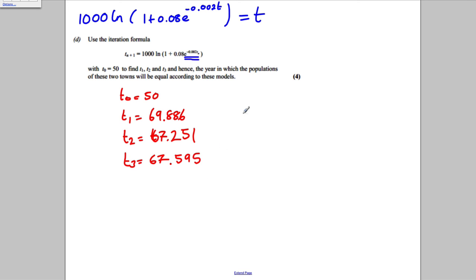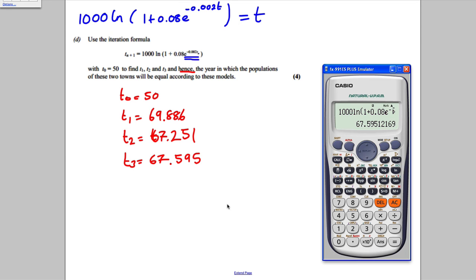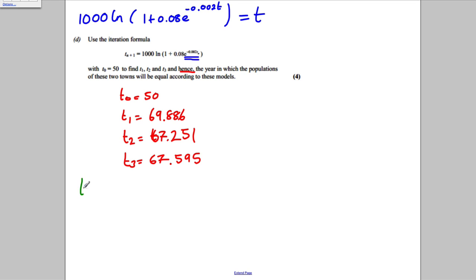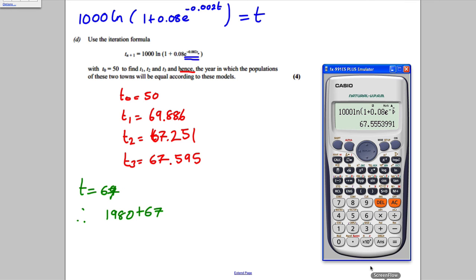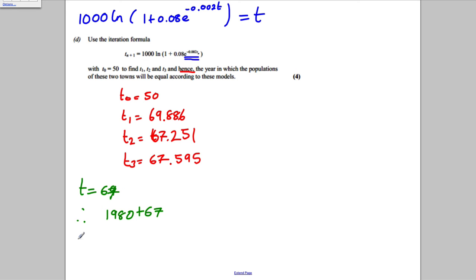So that's T1, T2, T3. And hence find the year in which the populations of these towns will be equal according to the model. So just keep, it doesn't ask you for this, but if you keep pressing equals here, you can see that it happens in the 67th year. So you can see it happens when T is equal to 67. Therefore if you add, or was it 1980? So 67, add the 67, it's going to happen in the year 2017. Therefore in year 2000, sorry not in 17, add 20, 2047 is going to be the answer to this.